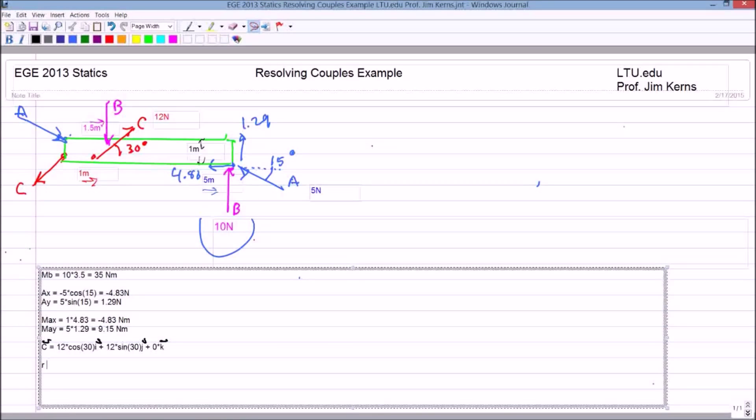Our R vector in this case is going to be equal to one i plus zero j plus zero k, because they're one meter apart in the x direction. They're aligned horizontally, so there's no y component, and there's no k component.